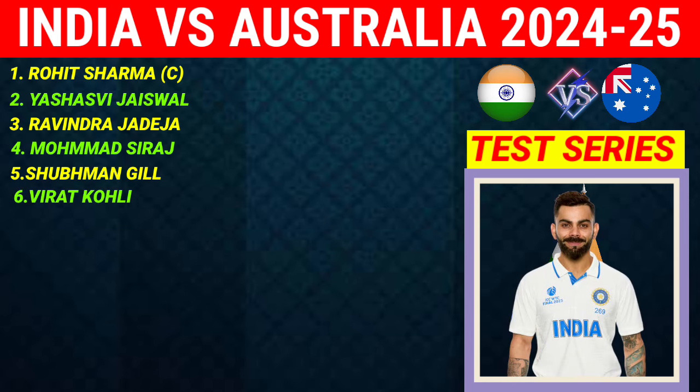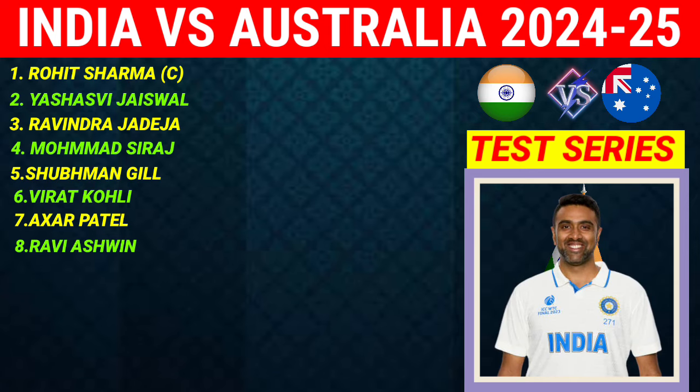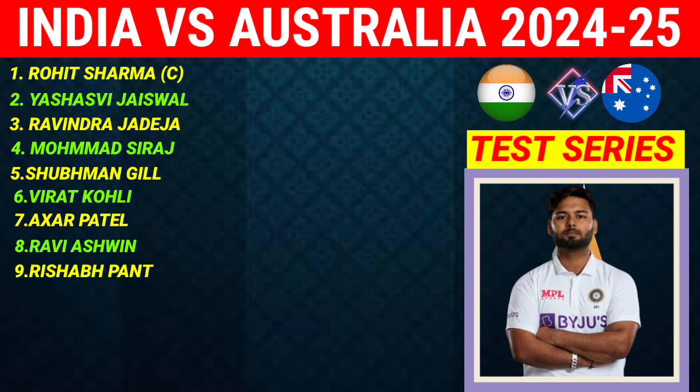Number 6: Virat Kohli — Right Handed Top Order Batsman. Number 7: Axar Patel — All-Rounder. Number 8: Ravichandran Ashwin — Bowling All-Rounder. Number 9: Rishabh Pant — Left Hand Wicket Keeper Batsman.